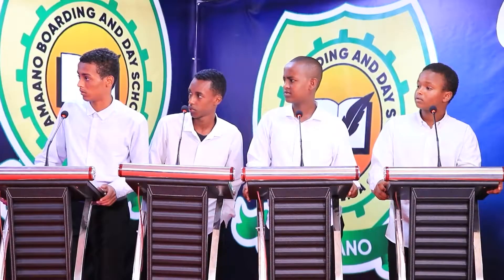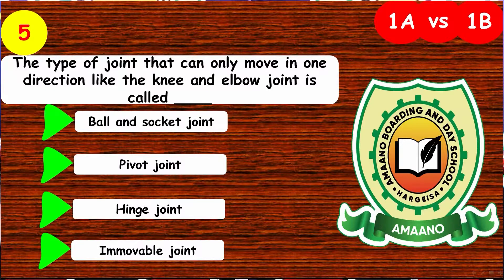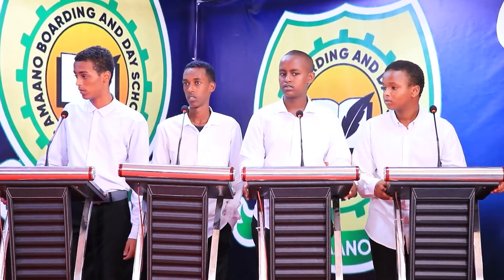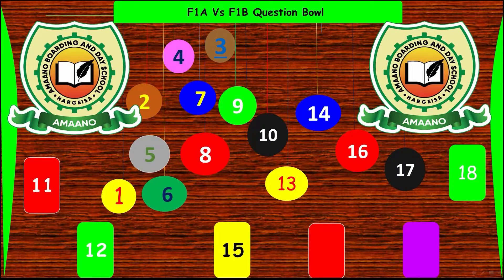Welcome to competition number five. This is a biology question. The type of joint that can only move in one direction, like the knee and elbow joint, is called what? Hinge joint. That's correct.